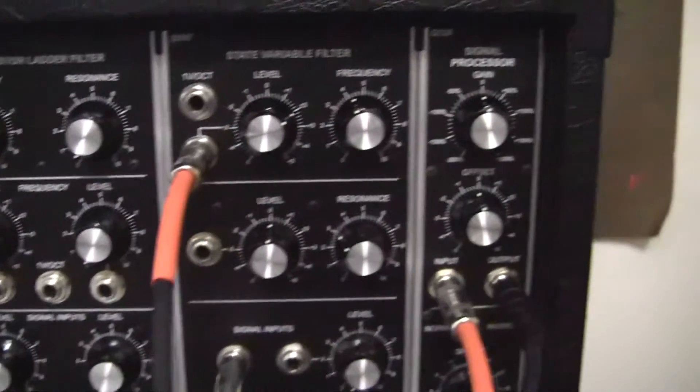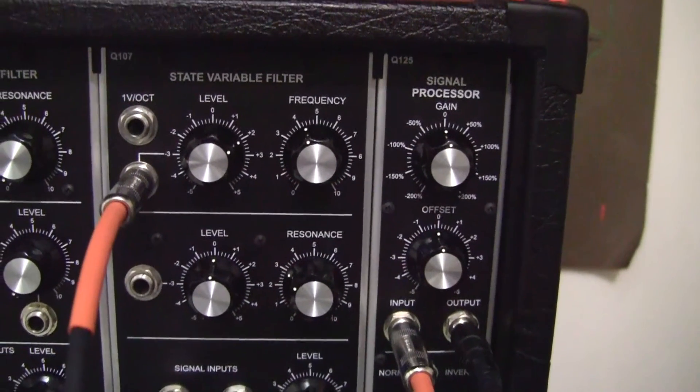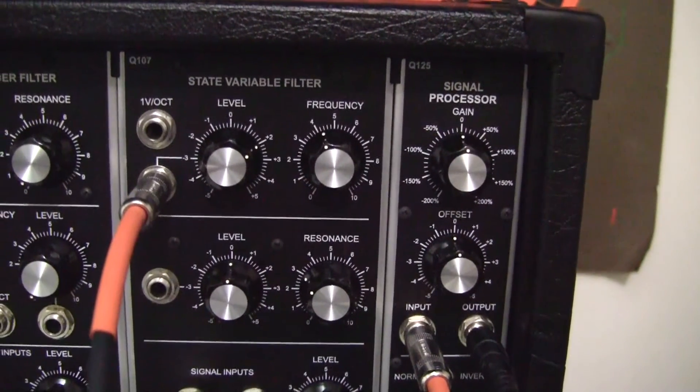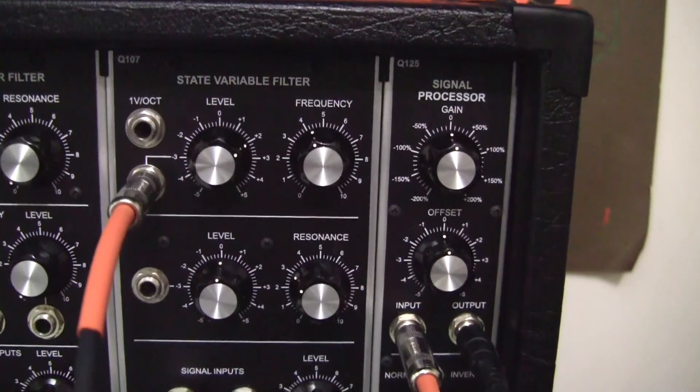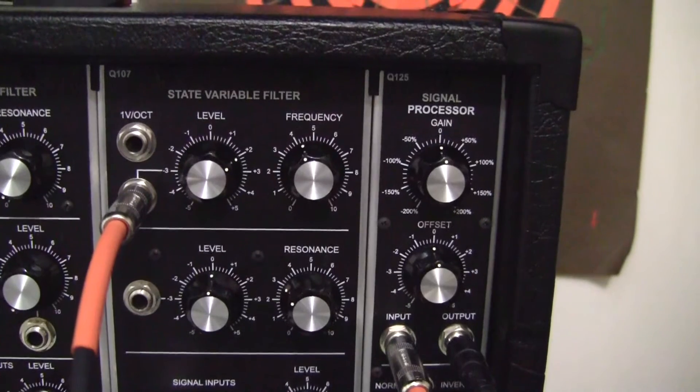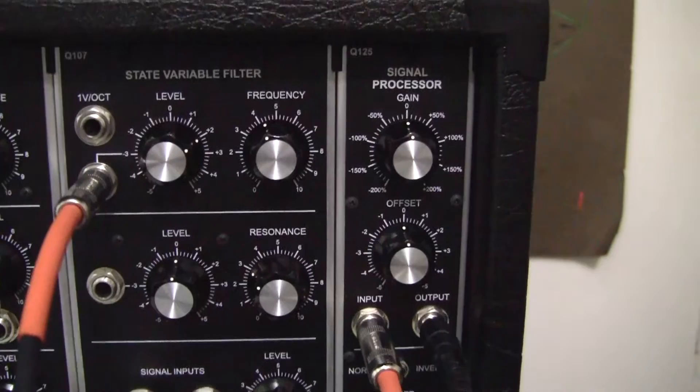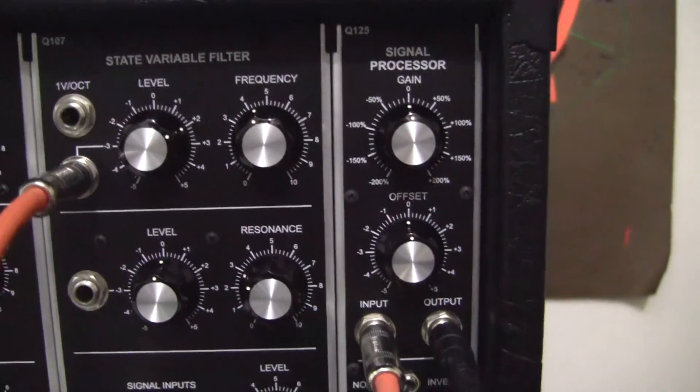If we put that into the signal processor and we increase that by 200% that's going to give us 10 volts on the positive side and 10 volts on the negative side.